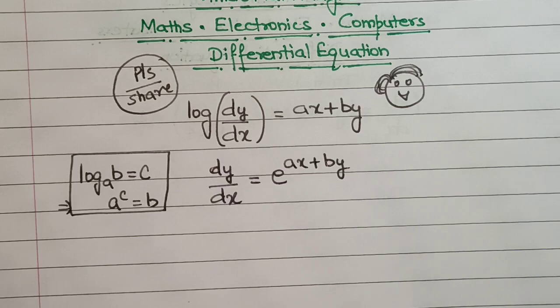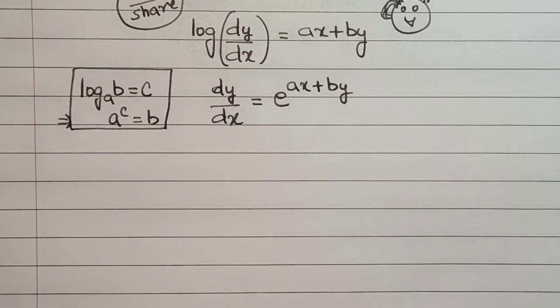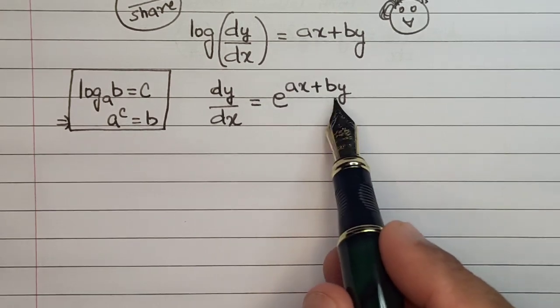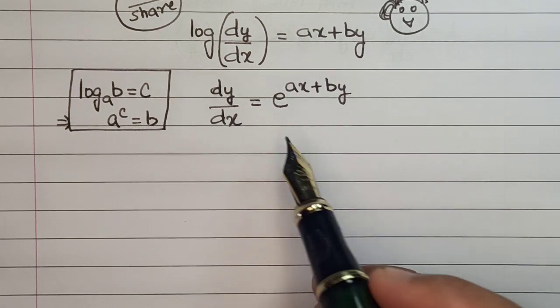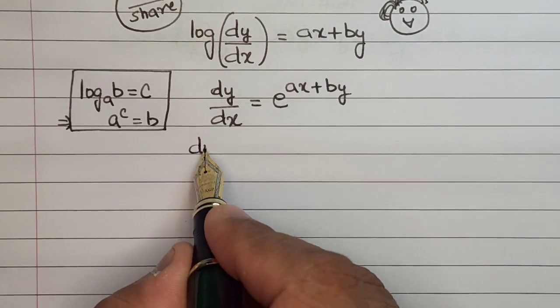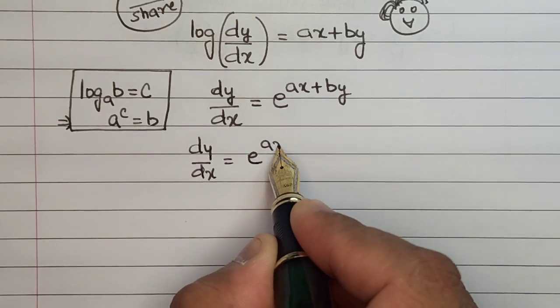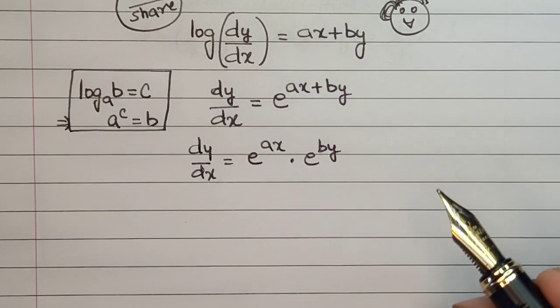After this, I will use another concept of exponents and powers. If the base is same and we have an addition format of the power, this can be broken down into the product of two separate powers. So dy/dx = e^(ax) · e^(by).